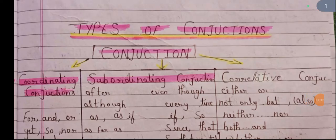Hello guys, welcome to my channel. Today we are going to take up types of conjunctions. First is coordinating conjunctions, second is subordinating conjunctions, and third is correlative conjunctions.